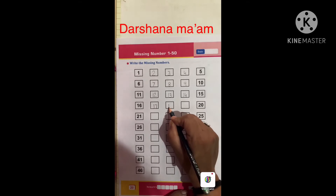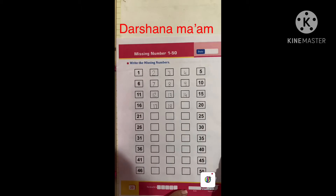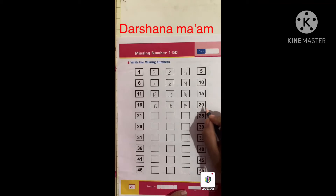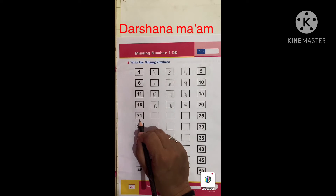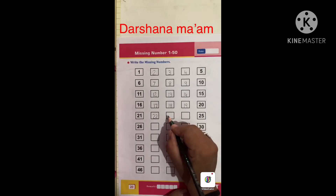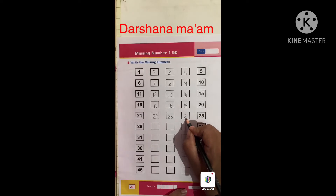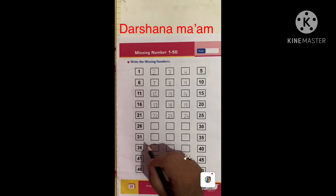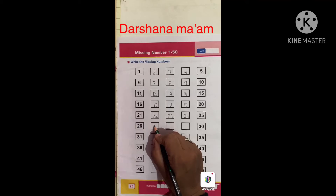Eighteen — one eight. Nineteen — one nine. Nineteen after twenty — two zero. Twenty after twenty-one — two one. Twenty-one after twenty-two — two two. Twenty-two after twenty-three — two three. Then twenty-four, twenty-five, twenty-six. Twenty-six after twenty-seven — twenty-seven.